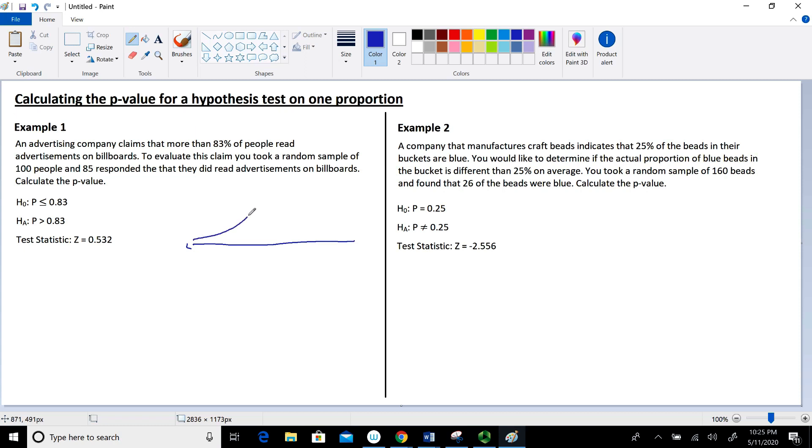Our standard normal distribution is that nice bell-shaped curve. On the scale of z, the mean of the standard normal distribution is zero. Our test statistic is probably about 0.5, specifically 0.532.